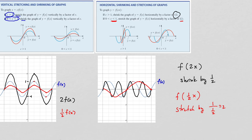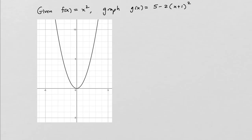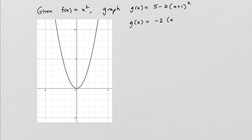Let's put some of these concepts together. Here we have an example where our original function is f(x) = x², and we'd like to graph g(x) = 5 - 2(x + 1)². First, I'm going to rewrite g(x) as -2(x + 1)² + 5. So we have a few things going on here, and I'm going to do them in order.